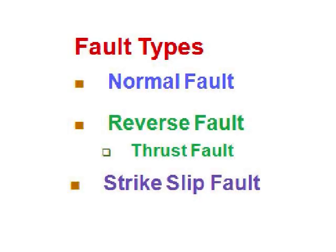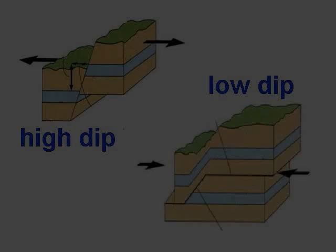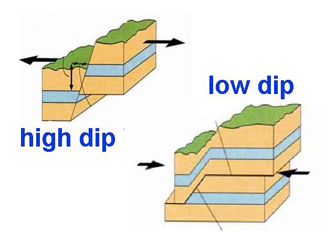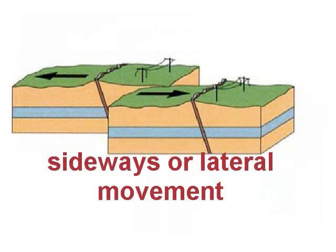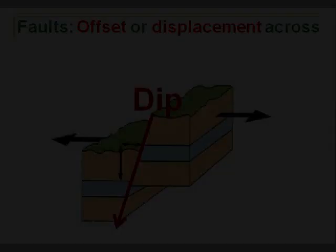We have three different types of faults. In faults caused by divergent and convergent plate margin movement, you can have high dip or low dip. Dip refers to the angle of the fault plane relative to the horizontal plane. In the faults caused by transform, they move sideways or lateral.